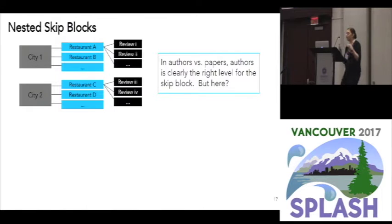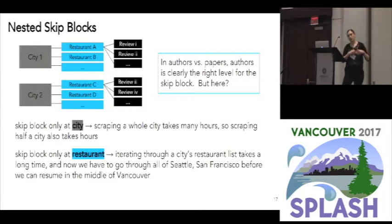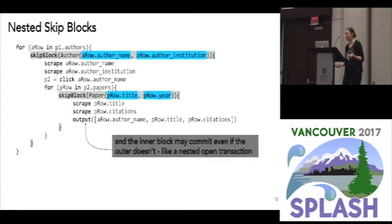In the authors-versus-papers case it's clear we want the skip block at the author level. But what if we're scraping reviews for restaurants across cities? If we have a skip block only at the city level, scraping a single city takes hours, so you can skip to the failure city but you're still taking hours to get back to the specific restaurant where you failed. On the other hand, with a skip block only at the restaurant level, going through all the restaurants for all prior cities takes a really long time. What you really want is nested skip blocks — one at the city level and one at the restaurant level — and that's what gives you adjusted granularity skipping: skip over cities as long as you can, then drop down to skipping over restaurants until you reach where you failed. Here's how nested skip blocks look in the context of the author-and-paper script — you simply add another skip block in the paper scope.